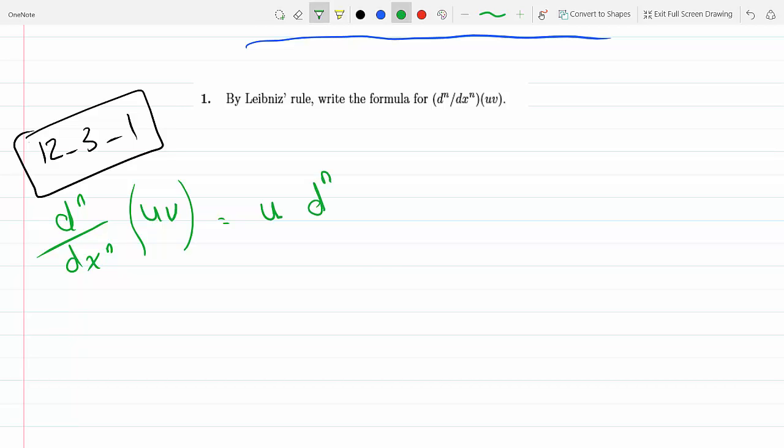I'll take the zero derivative of u, which means no derivative, times the nth derivative of v. I could divide this by zero factorial because the coefficients will be the binomial coefficients, but zero factorial is one so it doesn't matter.